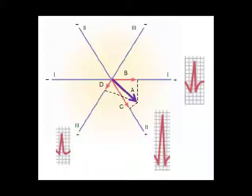The ECG waves are fluctuations in extracellular voltage recorded by each lead. Cases B, C, and D are projections of the heart vector A on leads 1, 2, and 3, with the resultant waves of the ECG recording.